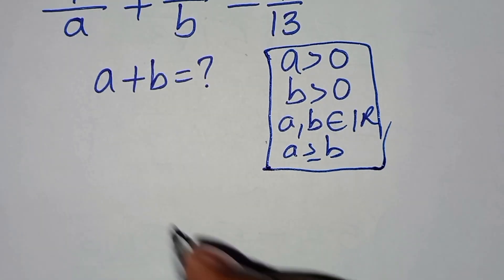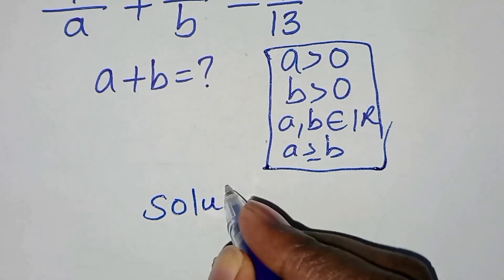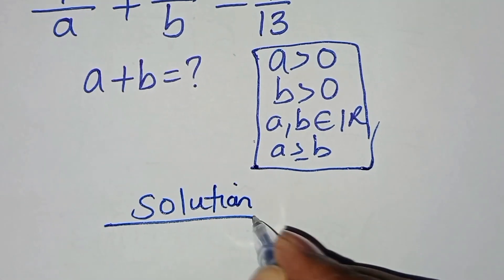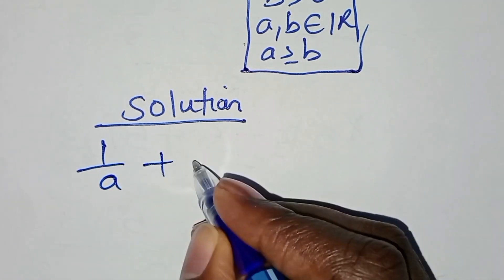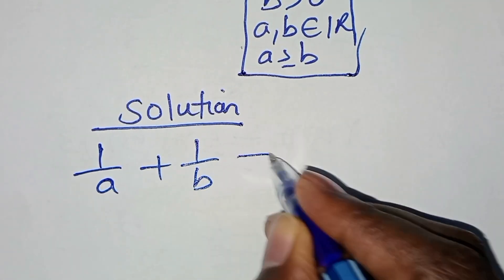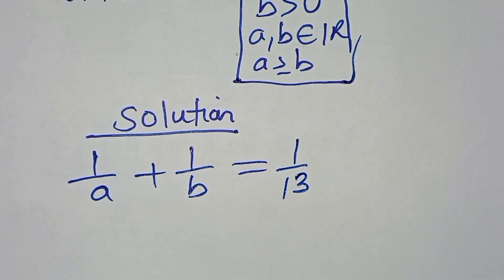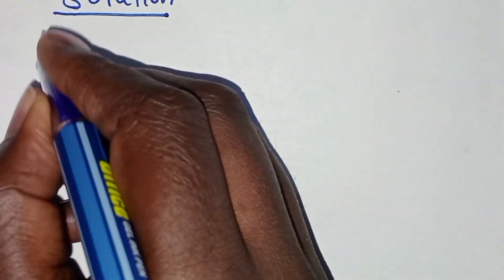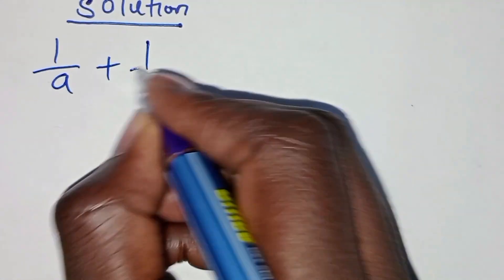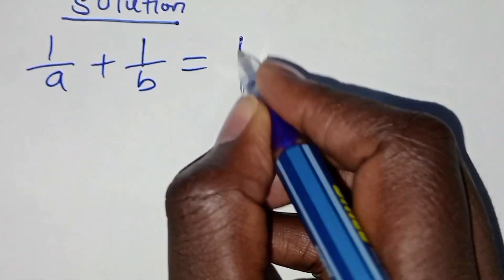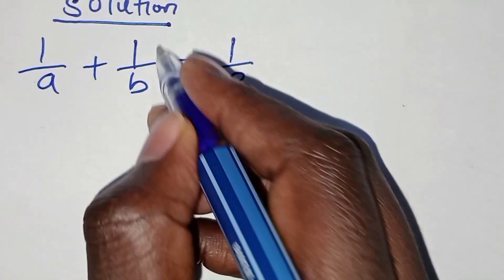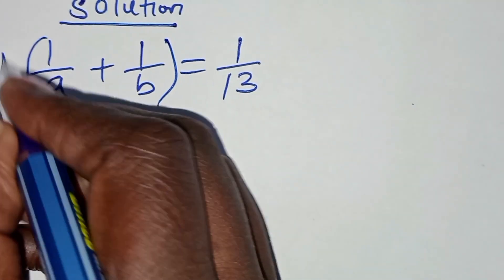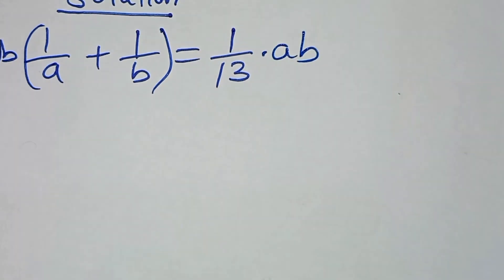Now let's dive into the solution. We have 1 over A plus 1 over B, equal to 1 over 13. Now let's multiply both sides by AB.